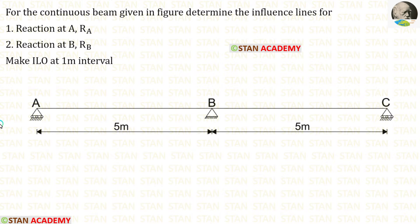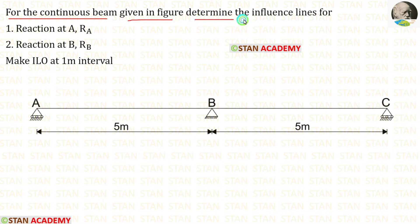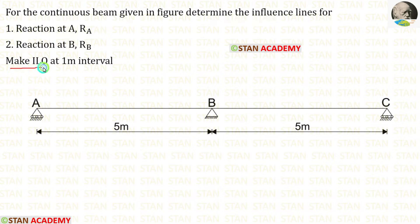Hello everyone. Today we are going to see a problem based on influence lines. Let us read the question: For the continuous beam given in the figure, determine the influence lines for reaction at A, reaction at B. Make influence line ordinates at 1 meter interval.